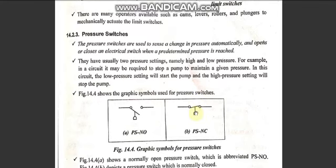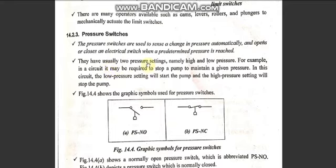Pressure switches are used to sense a change in pressure automatically. When the pressure exceeds or drops below a defined set point, the pressure switch automatically opens or closes. There are two types: normally open and normally closed. They usually have two pressure settings — high and low — and they are electrically coupled with solenoid valves to energize them.